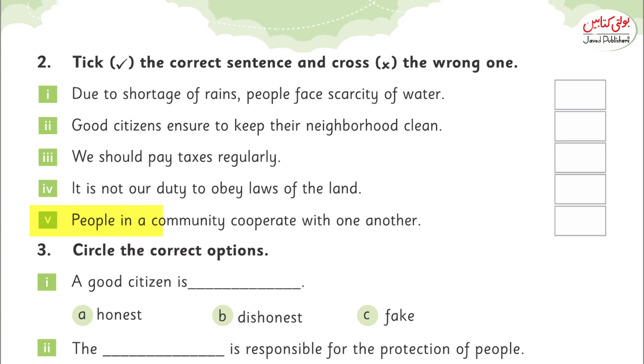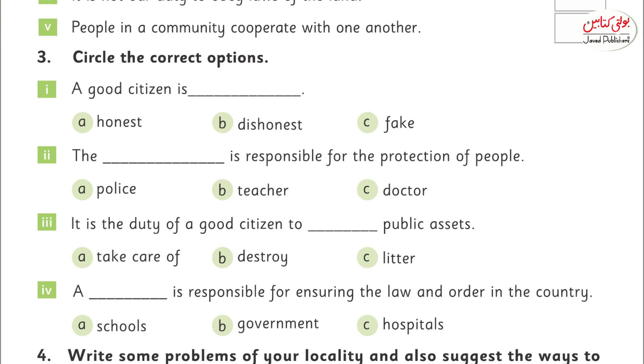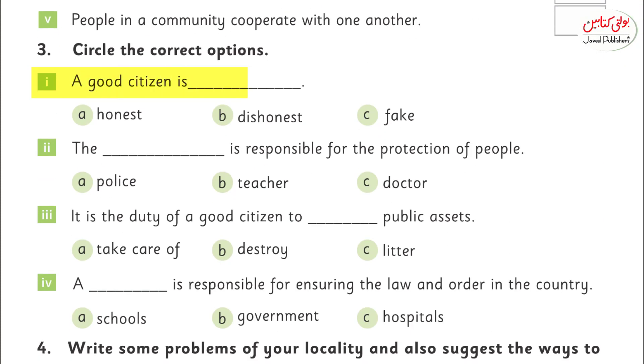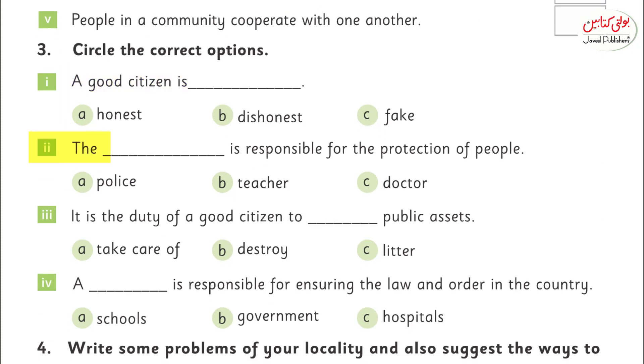People in a community cooperate with one another — tick. A good citizen is honest. The blank is responsible for the protection of people — police.